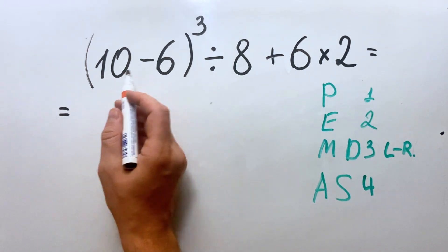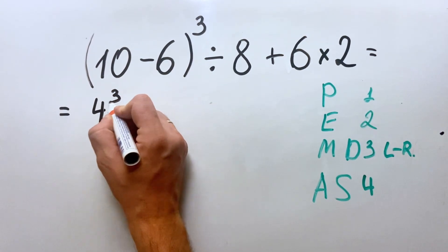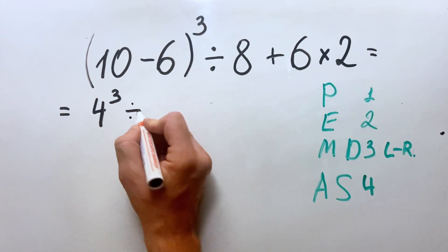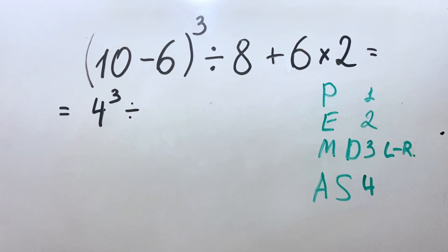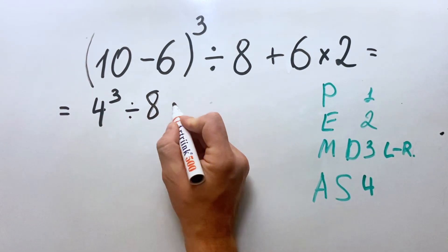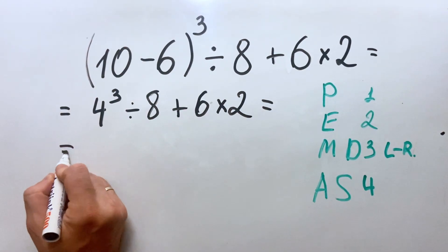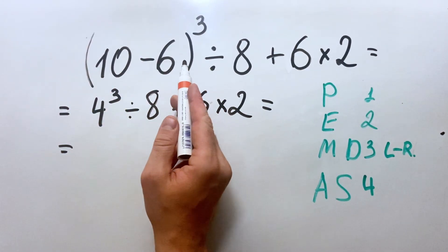Let's start. So we have 10 minus 6 equals 4, so we have 4 cubed divided by 8 plus 6 multiplied by 2. Okay, now that we got rid of the parenthesis...